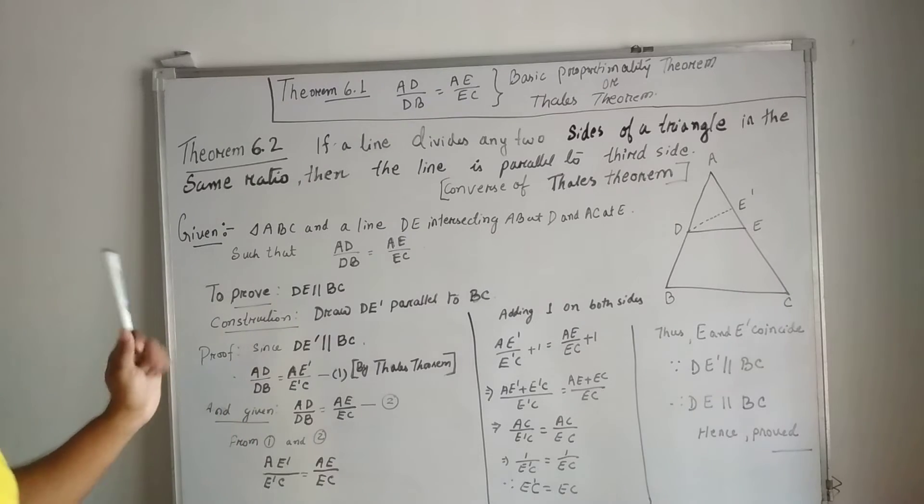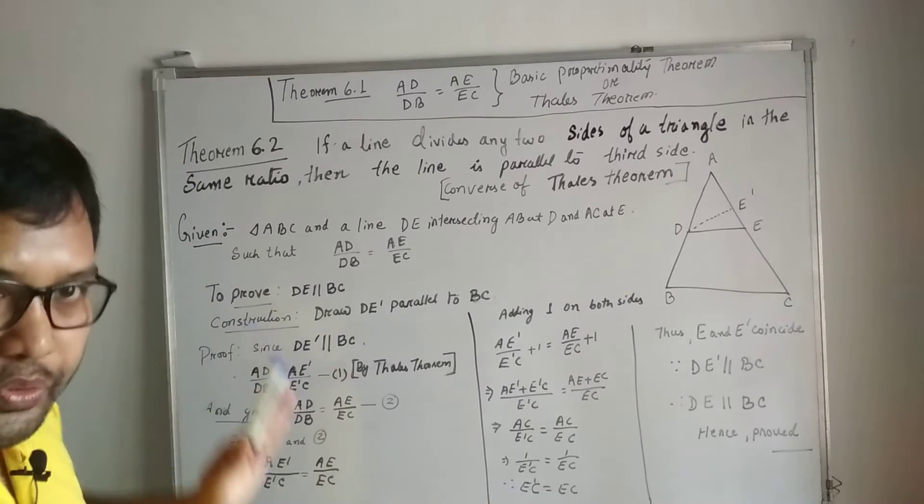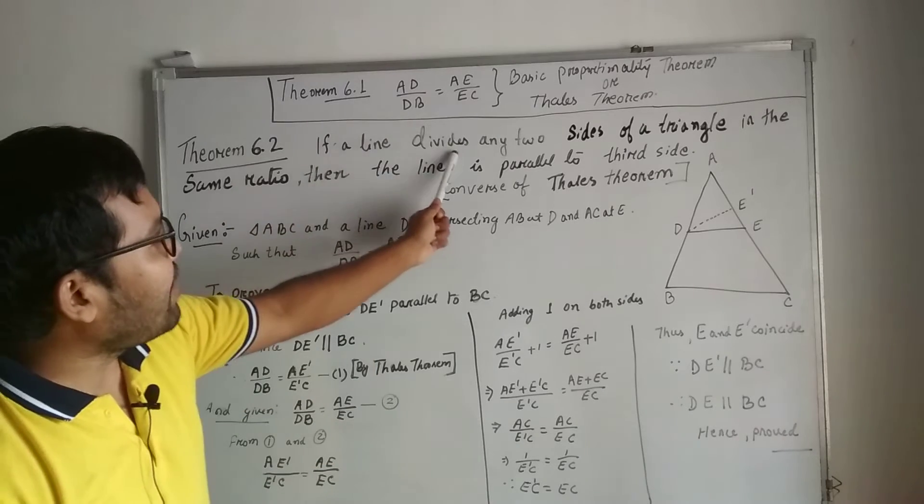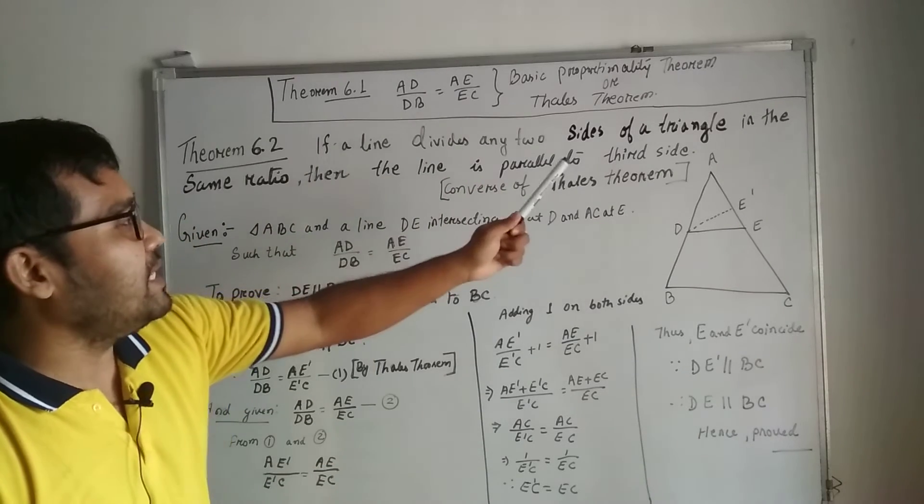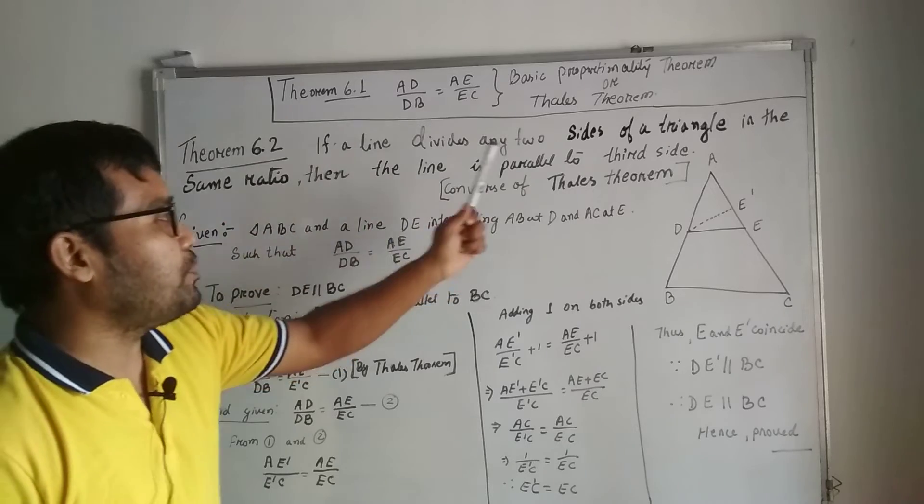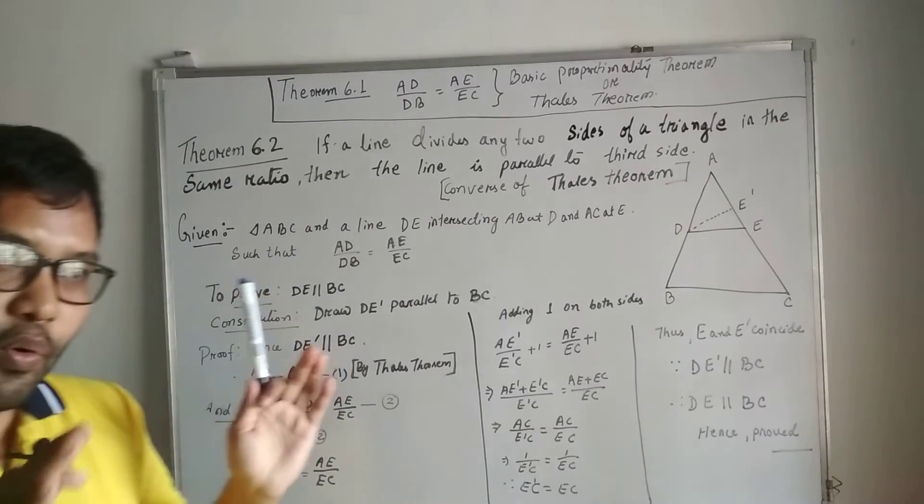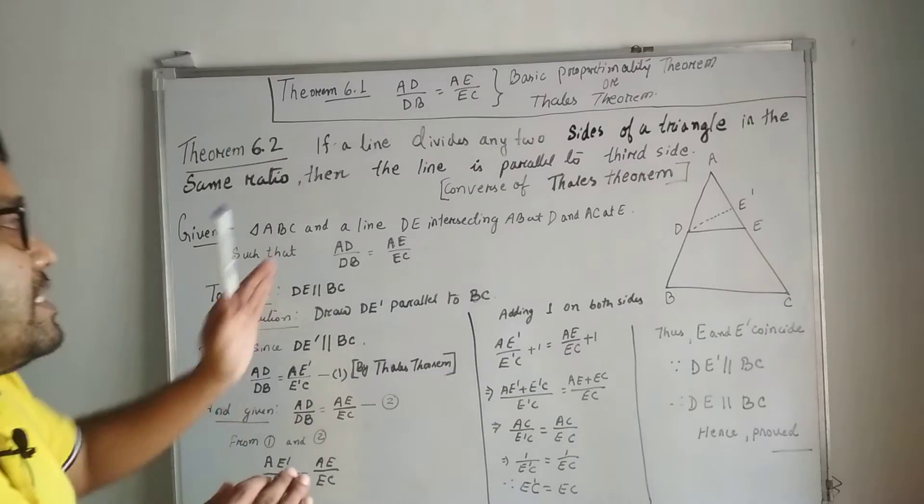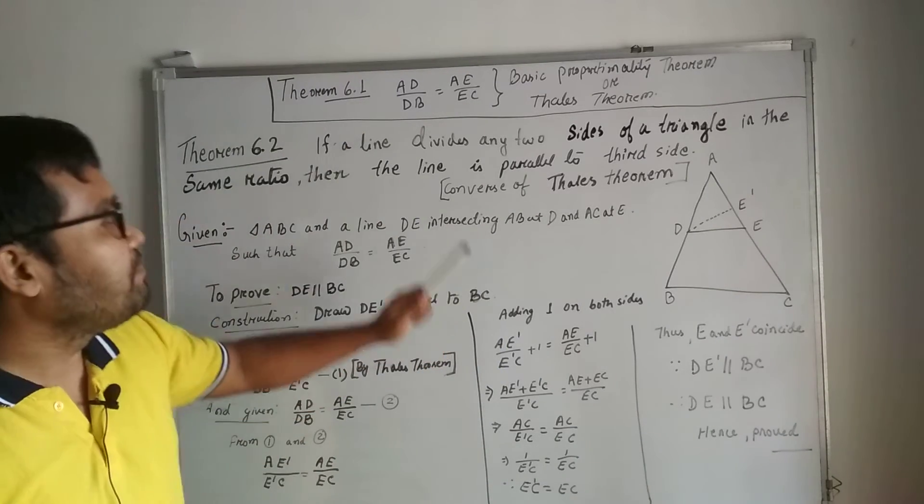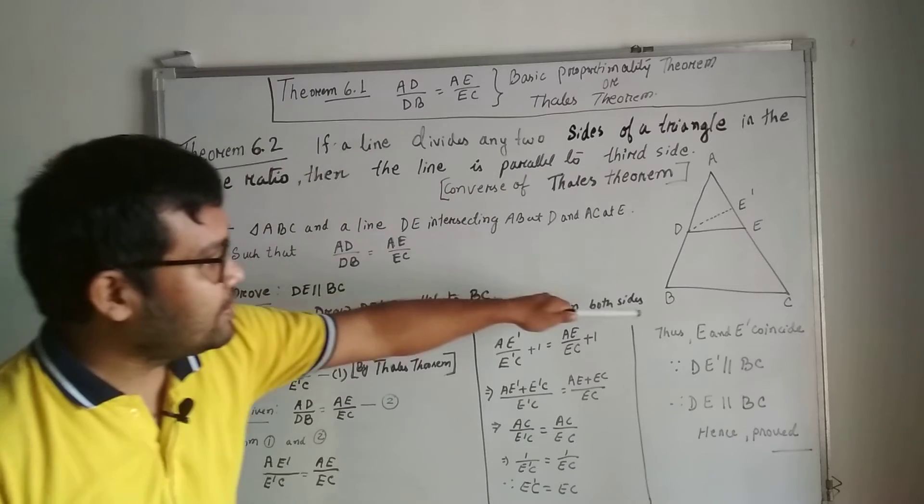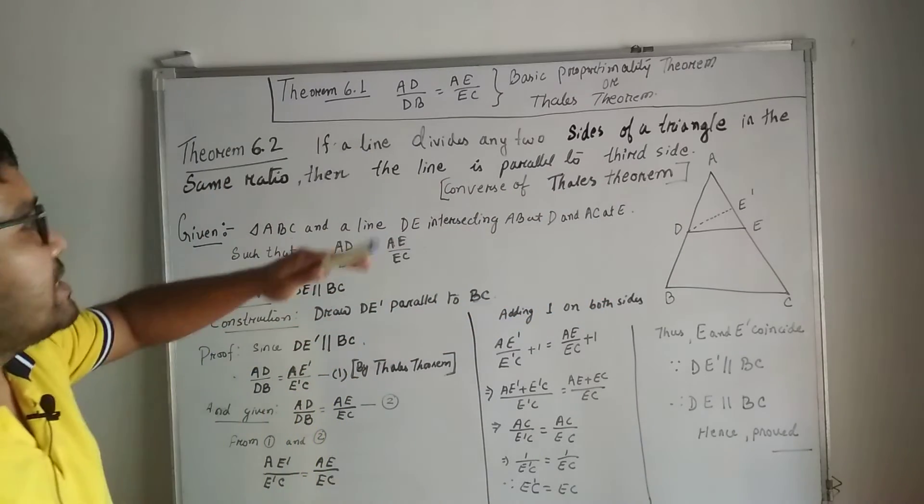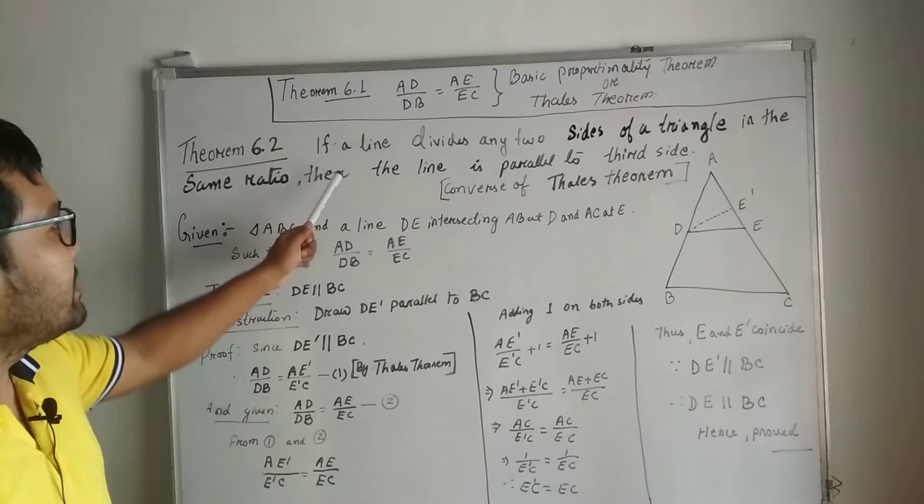Today we are going to discuss theorem 6.2. What does theorem 6.2 say? If a line divides any two sides of a triangle in the same ratio, then the line is parallel to the third side. If you observe this theorem, this is the reverse of theorem 6.1. Theorem 6.1 says if a line is parallel then it divides in the same ratio, but now we say the line divides the two sides in the same ratio.